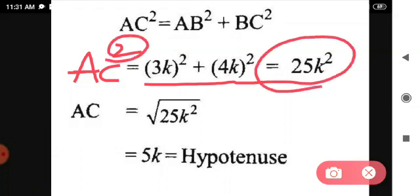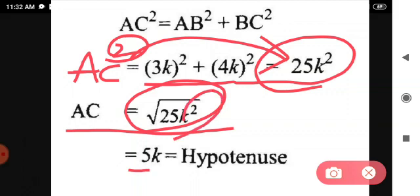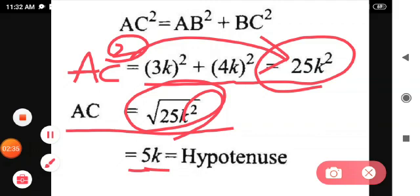When this square comes to this side, then we get AC equals root of 25K square. Then for root 25, we know 5. For root K square, we get K. So this is the hypotenuse.